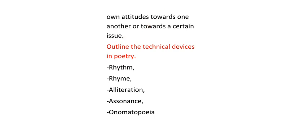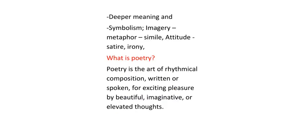Question two. Among the technical devices in poetry, we have a few technical devices. We have rhythm, we have rhyme, we have alliteration, assonance, and onomatopoeia. We also have deeper meaning and symbolism, and in symbolism we have imagery, metaphors, similes, attitude, satire, and irony.